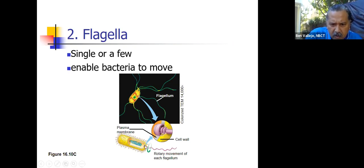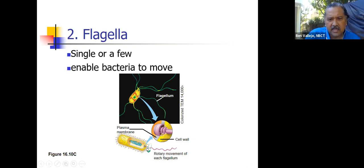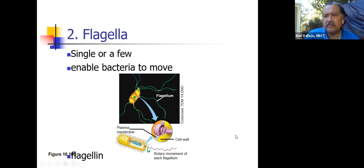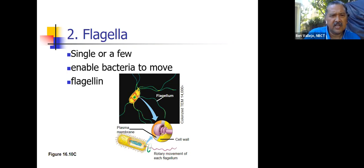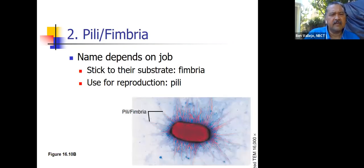Here's a picture of the flagellum and the cell wall — you can see how they're stuck on there, with a kind of rivet on the inside. When it rotates one way, it makes waves and pushes the bacterium forward. The bacterial flagella is made up of a protein called flagellin.